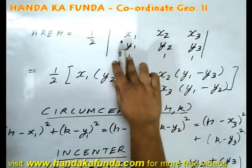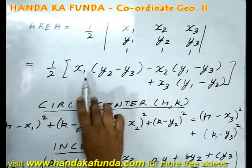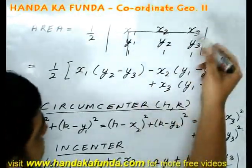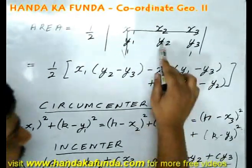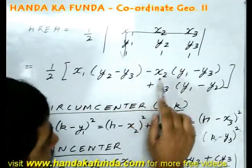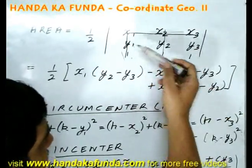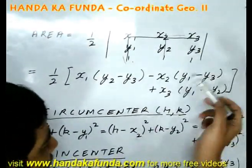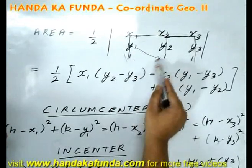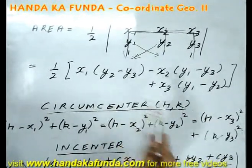First, take any row — I have taken x1, x2, and x3. Write those points with an alternating plus and minus sign: plus x1, minus x2, and plus x3, and multiply them. Multiply x1 with the sub-determinant obtained by removing that row and column, which gives y2 minus y3. Then minus x2 multiplied by the remaining portion, which is y1 minus y3. Then plus x3 multiplied by y1 minus y2. Please remember, if the result comes out as a negative value, the area is the mod of that particular value.